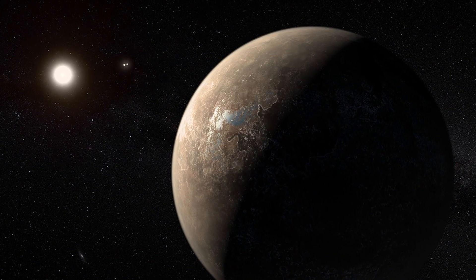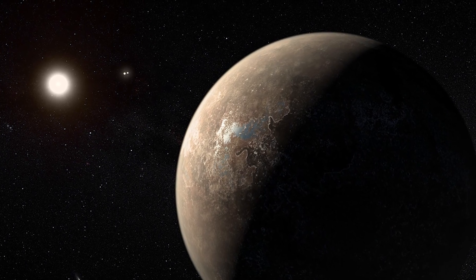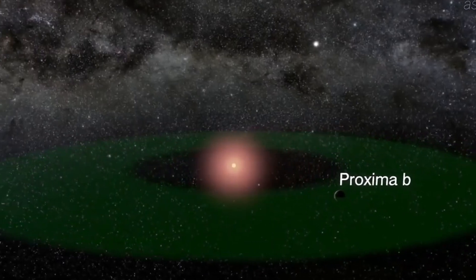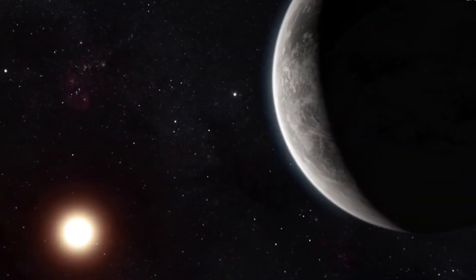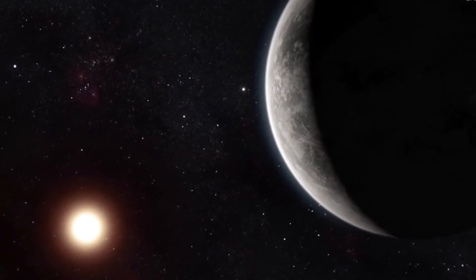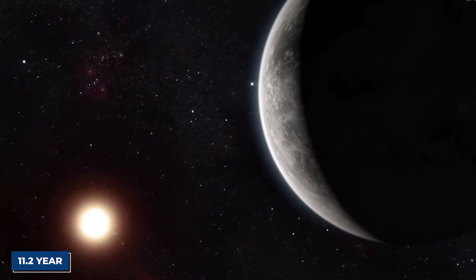Proxima b is tidally locked to its star, which means that one side is constantly facing Proxima Centauri and the other is always dark. It is quite near to its star, with just an 11.2 year rotation.